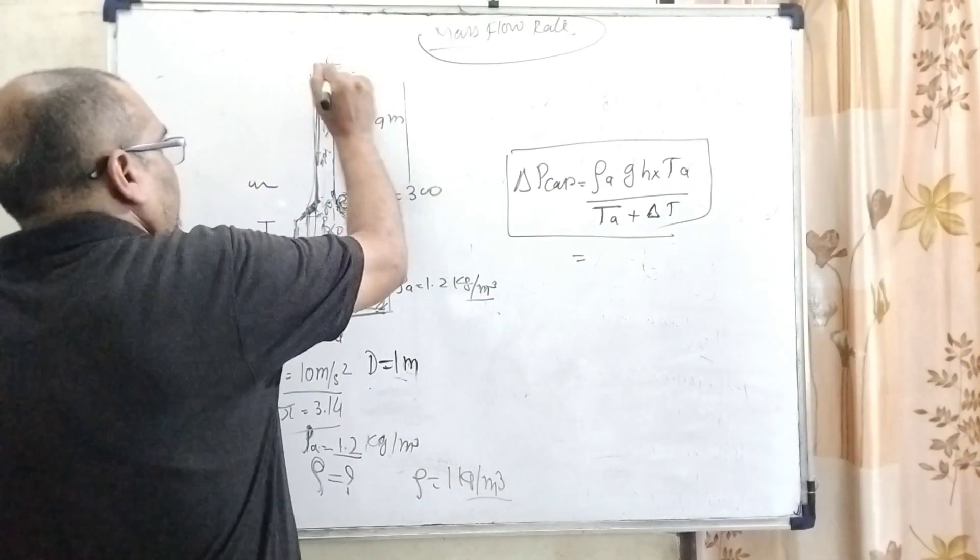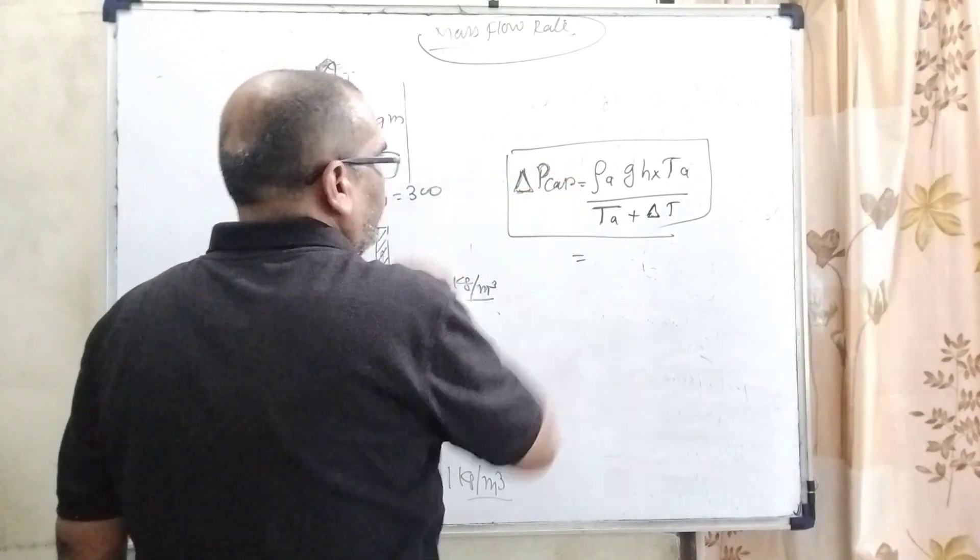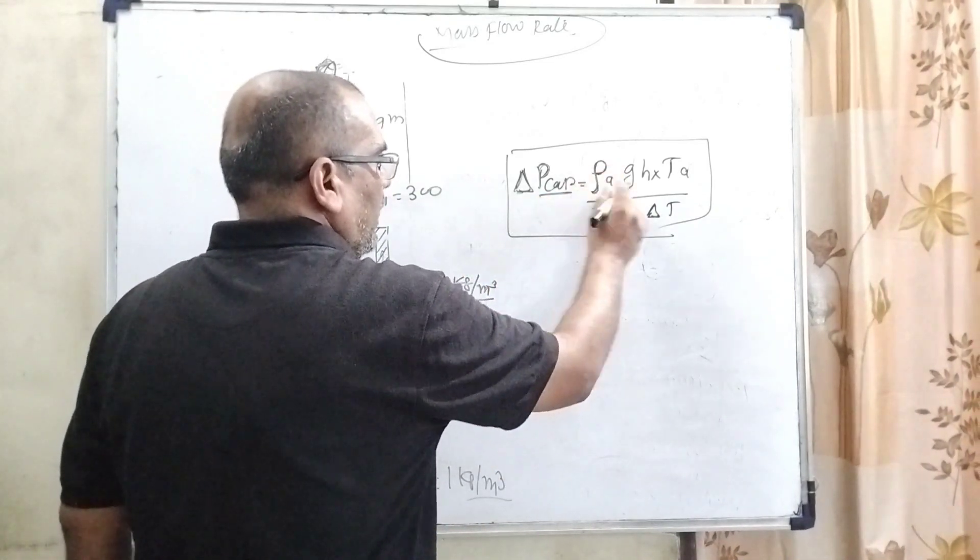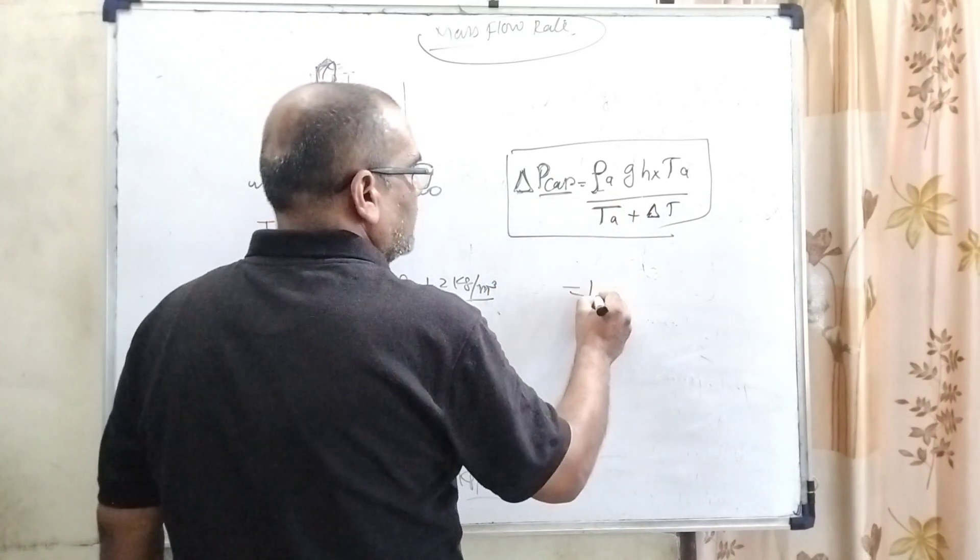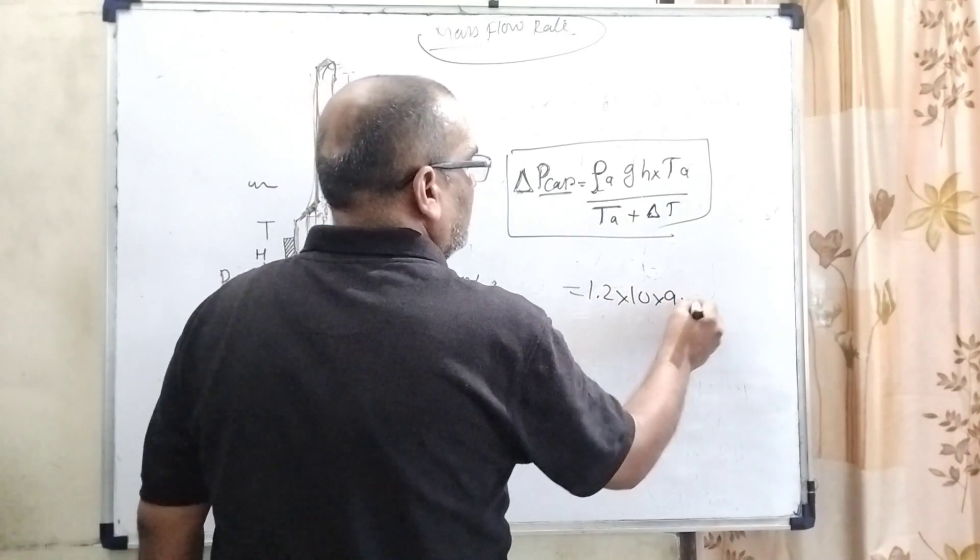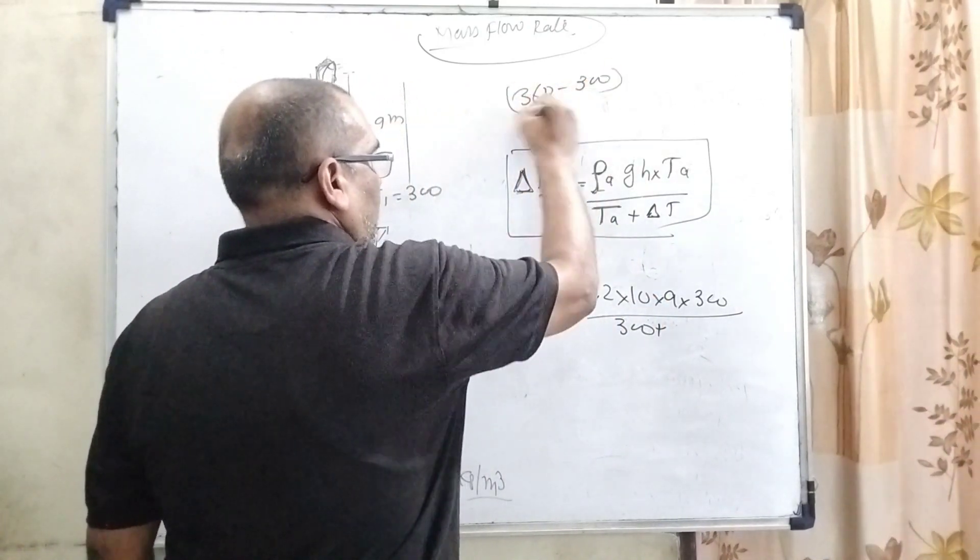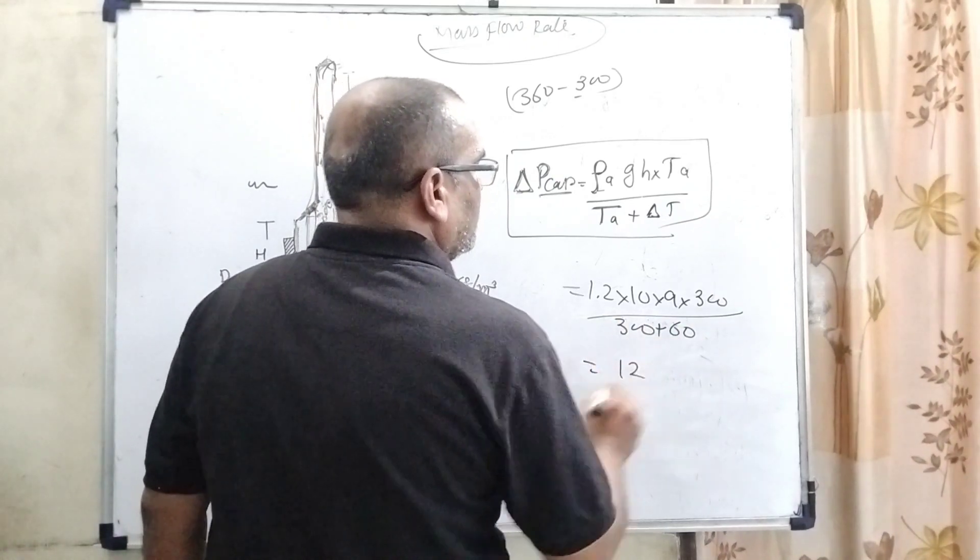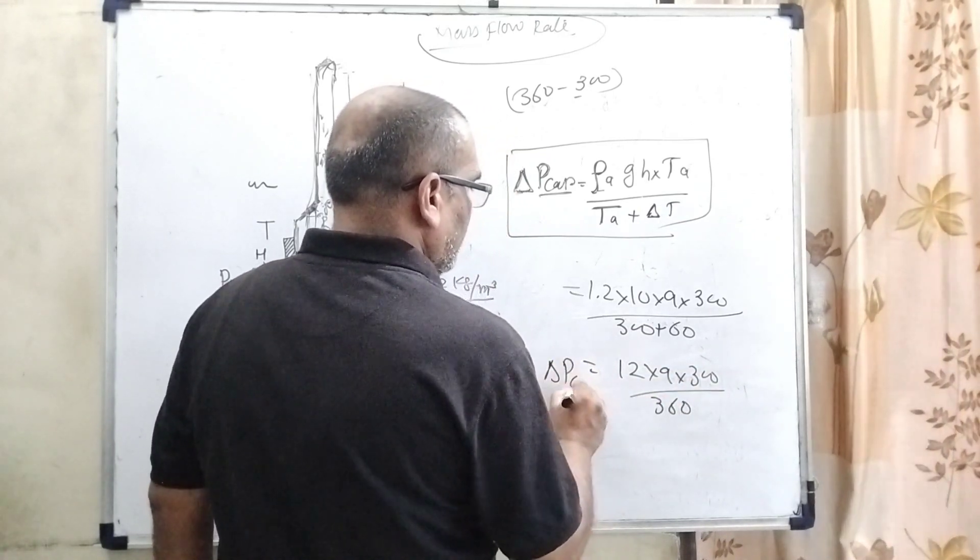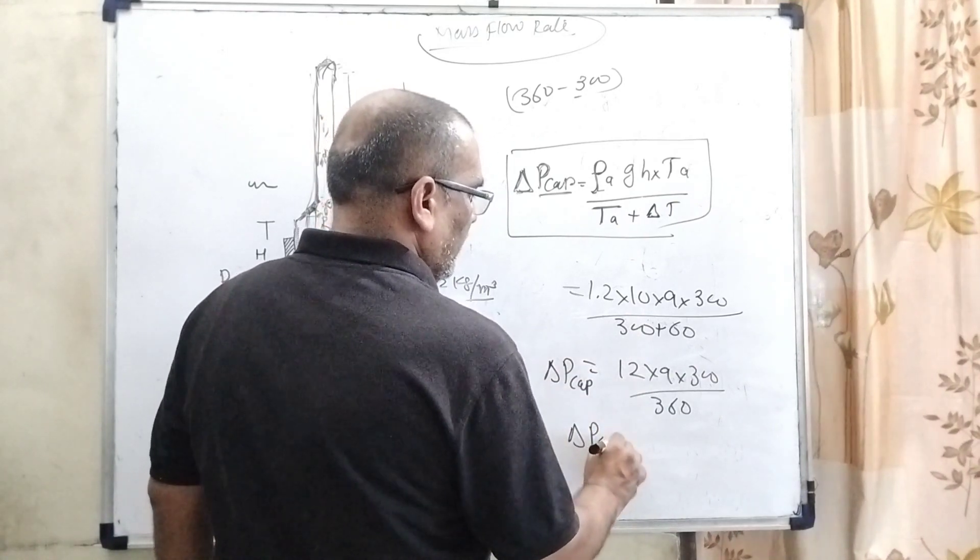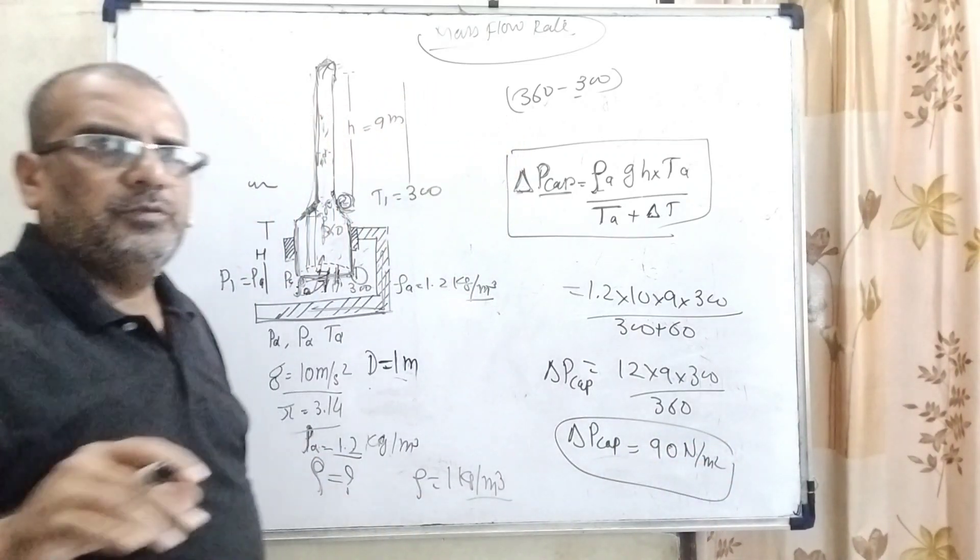Now when it is capped, meaning covered by a cap, we use the change in pressure. Delta P: when it's capped, rho_A times g times h. P_A plus delta P. Substituting values: 1.2 times 10 times 9, here 300 times, and delta T you know is 360 minus 300, which is 60. The change in pressure when it is capped is 90 Newton per meter squared. So I hope you understood this question.